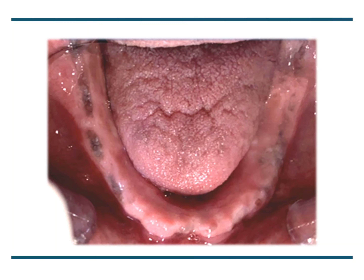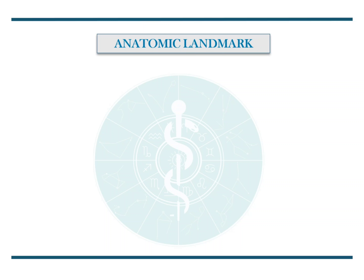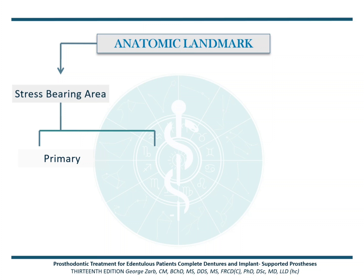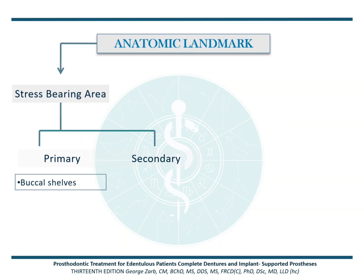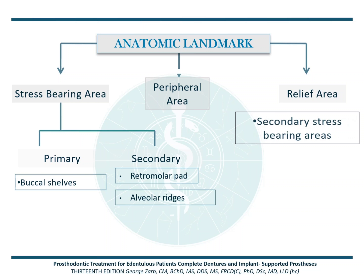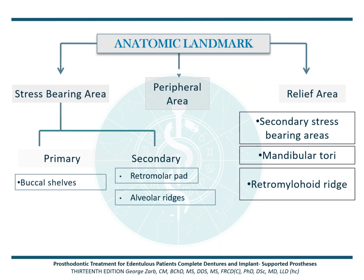GPT-9 defines an anatomical landmark as a point of reference, and it is further classified as the stress-bearing area, which includes primary and secondary stress-bearing areas. The primary stress-bearing area for the edentulous mandible is the buccal shelf. The secondary stress-bearing areas include the retromolar pads and the alveolar ridges. Next are the peripheral areas, and third we have the relief areas, which include the secondary stress-bearing areas, mandibular tori, the retromylohyoid ridge, and the genial tubercles.